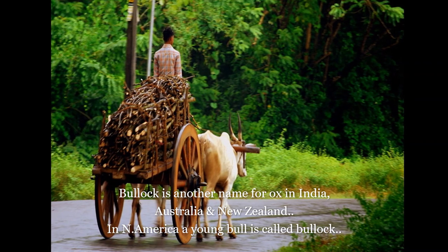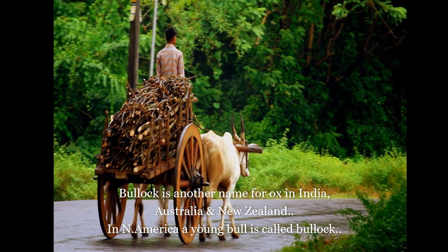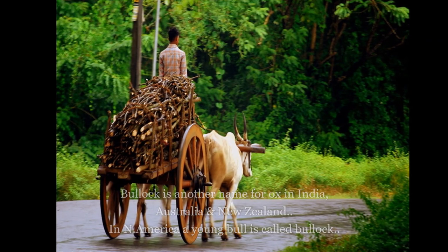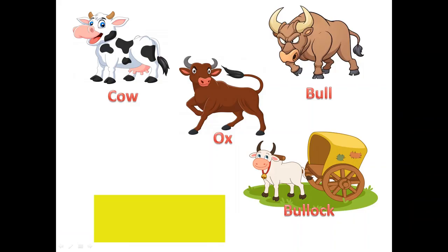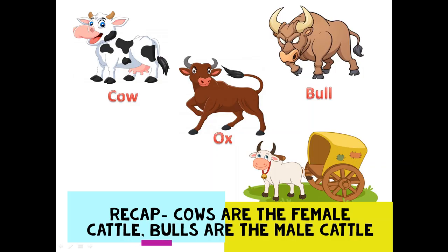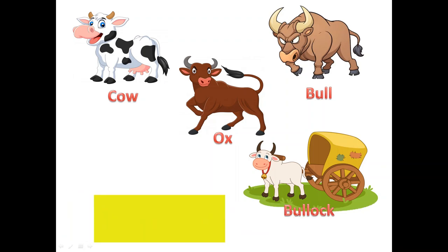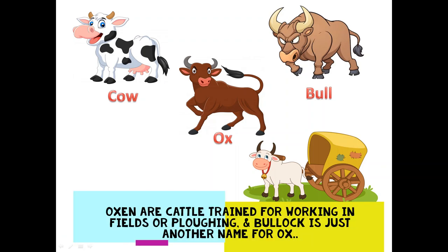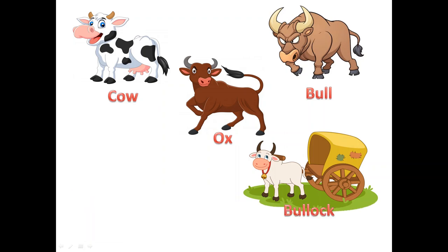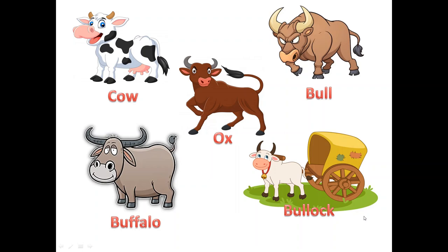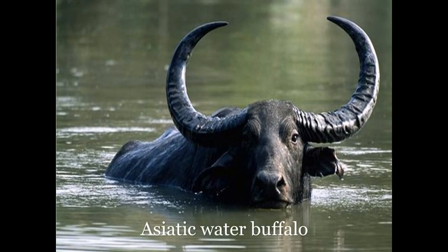Bullock is just another name for ox in India, Australia, and New Zealand. In North America, a young bull is called a bullock. So to summarize: a cow is female cattle, a bull is male cattle, an ox is trained for working in fields or plowing, and bullock is just another term for ox.